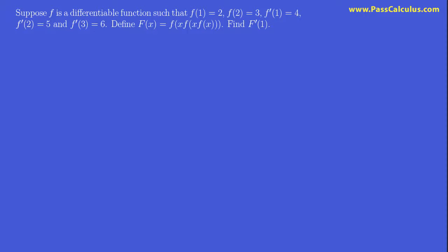If you thought the last one was hard, this one here is even going to be harder. Let's see how this one is going to go. We have a differentiable function f again, and we're given some information about it: f of 1 is 2, f of 2 is 3, and we're given some information about the value of f prime at a few points as well. Define capital F of x to be f at x times f at x times f of x, and we need to find F prime of 1.